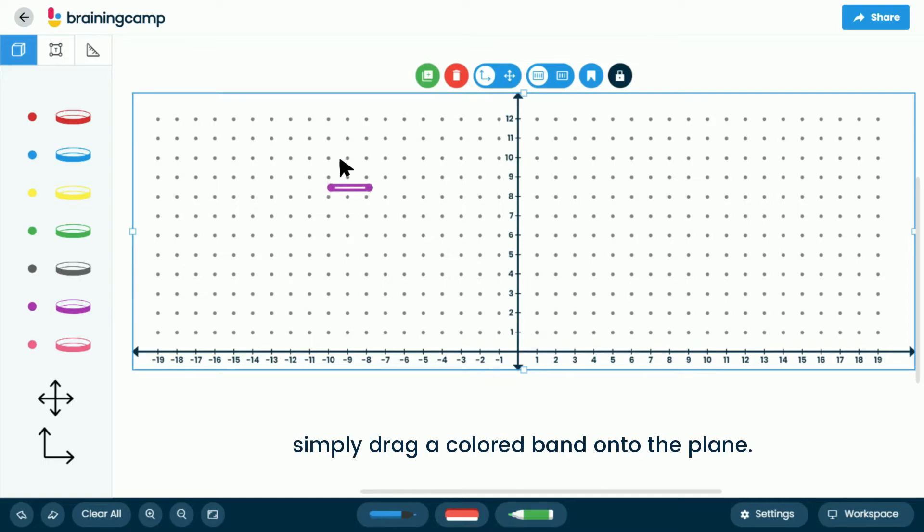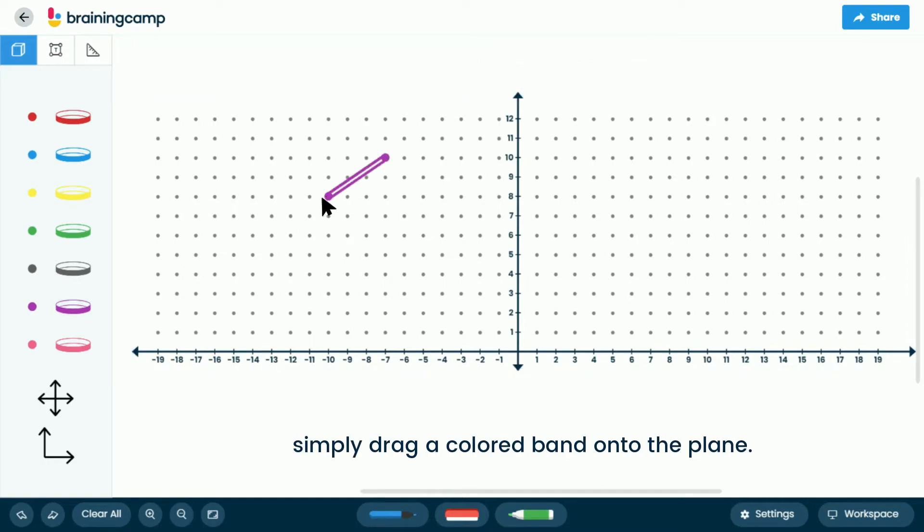To graph polygons, simply drag a colored band onto the plane. Once a closed figure is created, select to reveal a menu of options.